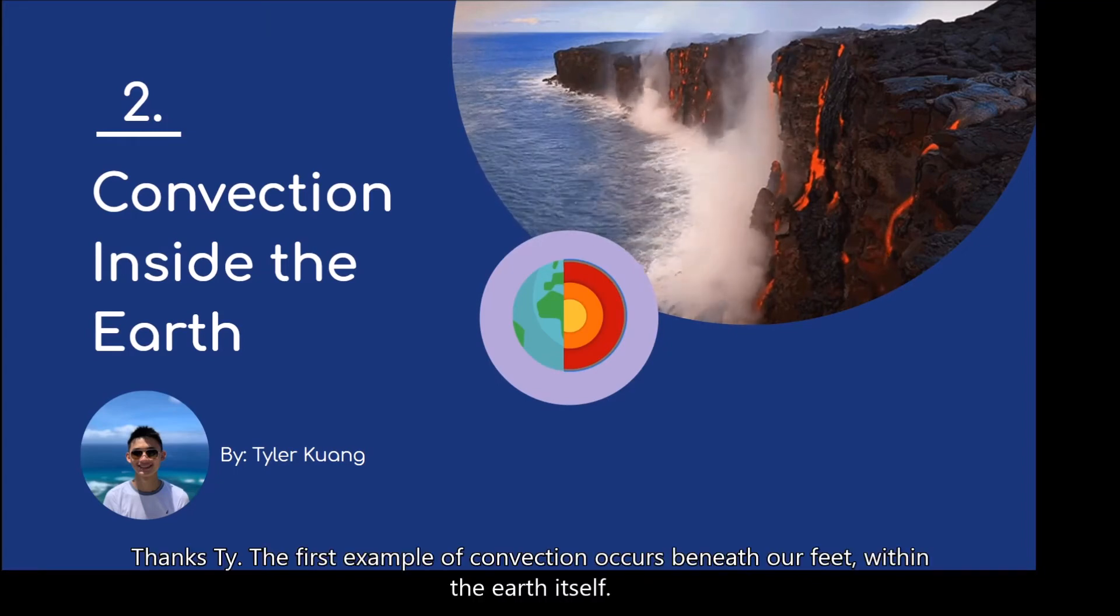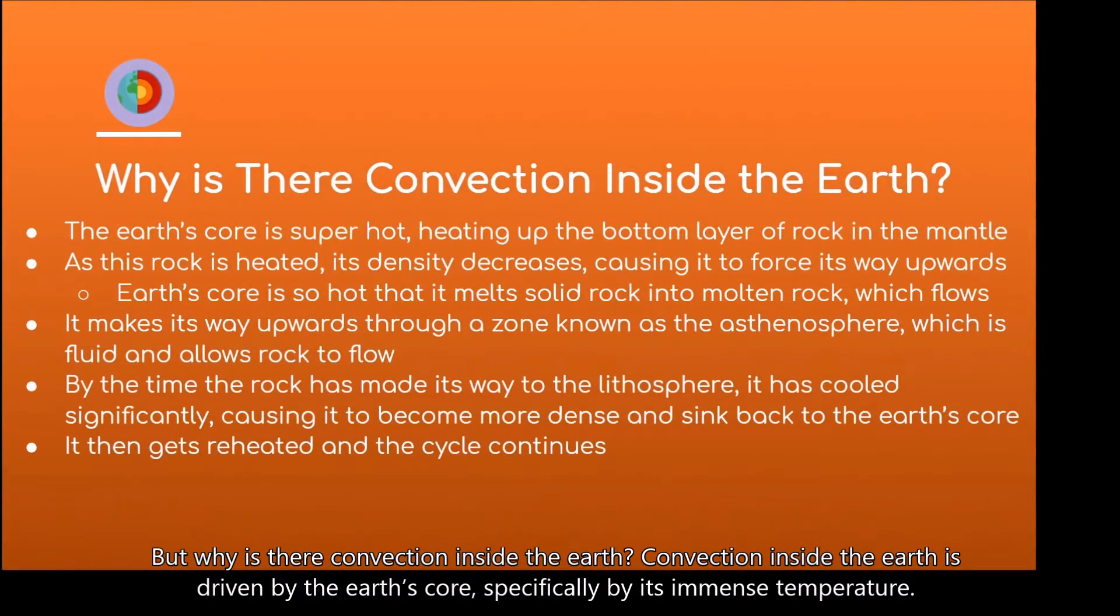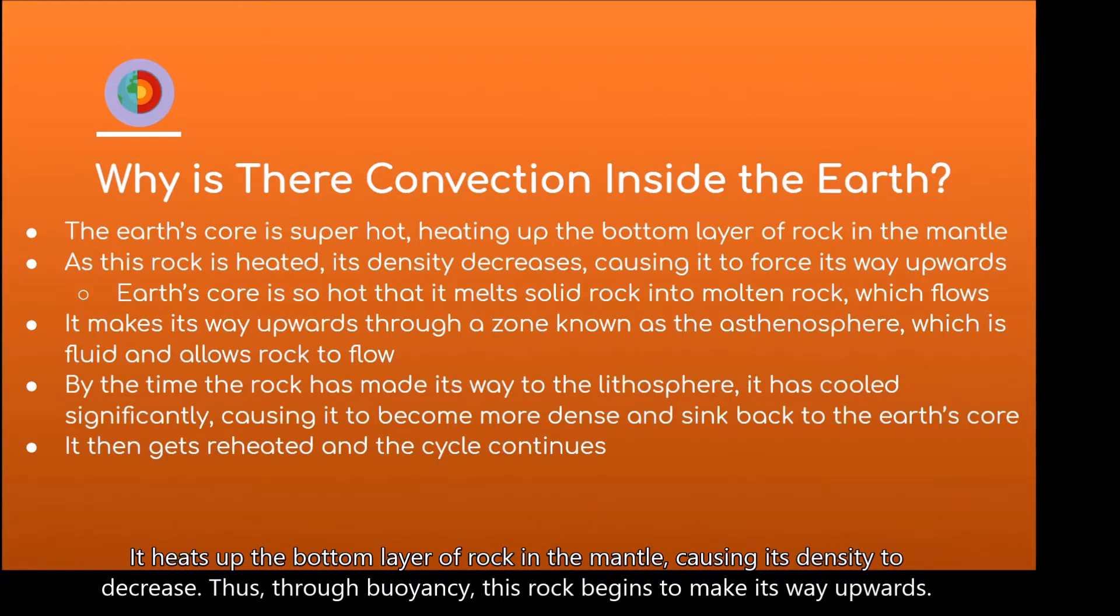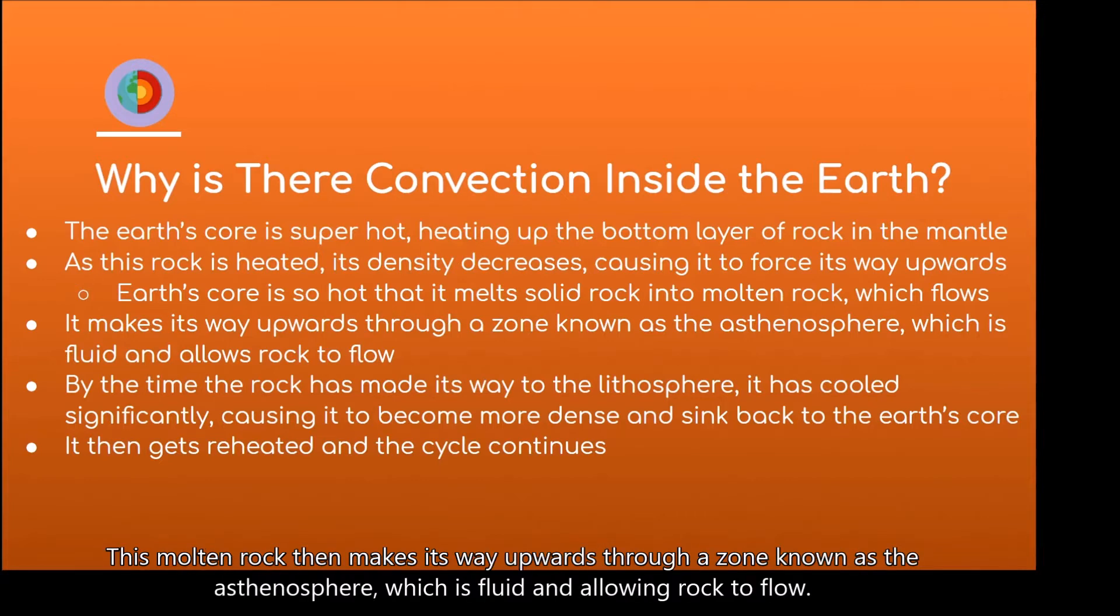Thanks, Ty. The first example of convection occurs beneath our feet, within the Earth itself. But why is there convection inside the Earth? Convection inside the Earth is driven by the Earth's core, specifically by its immense temperature. It heats up the bottom layer of rock on the mantle, causing its density to decrease. Thus, through buoyancy, this rock begins to make its way upwards. It's not solid rock, however, as the Earth's core is so hot that it melts this solid rock into molten rock, and thus it flows.